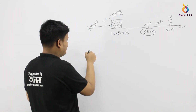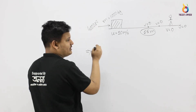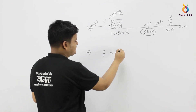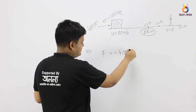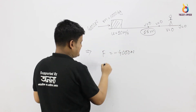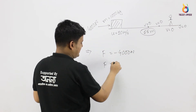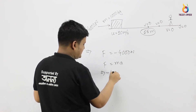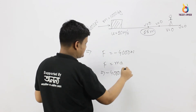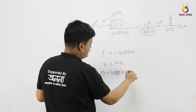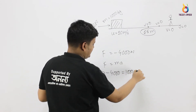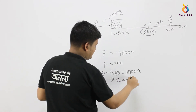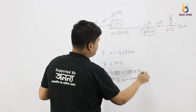First of all, we have a 4000 Newton brake force. That means F is equal to minus 4000. And we know that F is equal to ma. This implies minus 4000 is equal to mass 1000 kg into a. This implies a is equal to minus 4 meters per second squared.